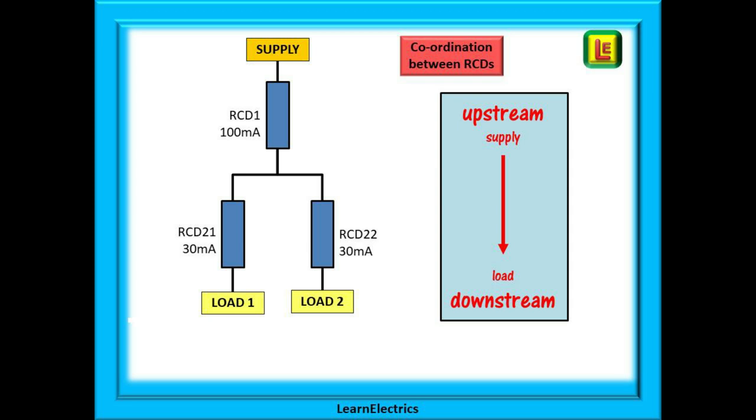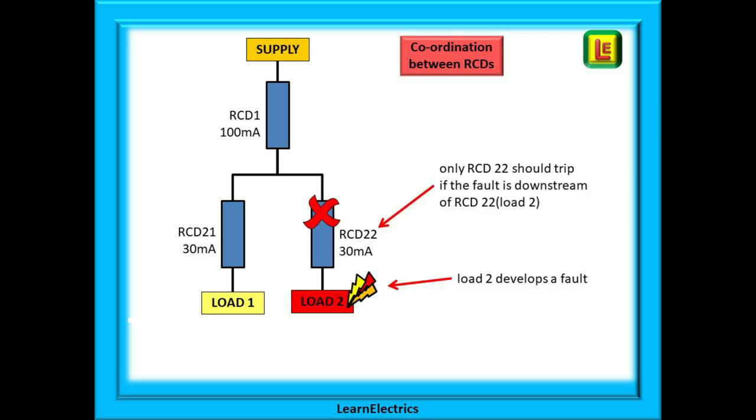If we have a circuit protected by a 100 milliamp RCD with two 30 milliamp RCDs downstream of it we can see that RCD 21 in this example is protecting load number one and RCD 22 is protecting load number two. If a fault should develop in load number two only RCD 22 should operate. RCD 1 should remain in the on position and continue to supply power to RCD 21 and load number one since this part of the installation does not have a fault. We only want load number two to be disconnected.